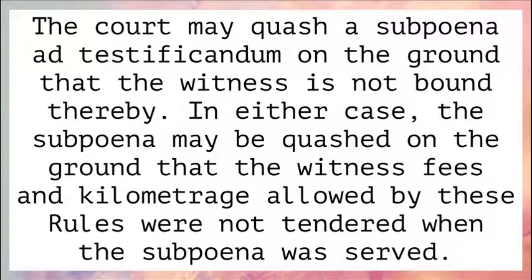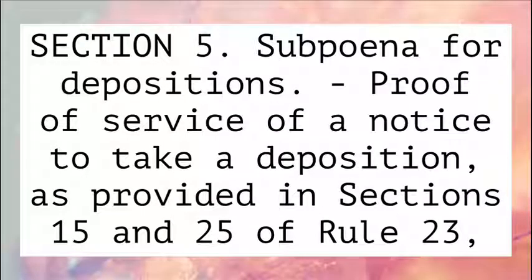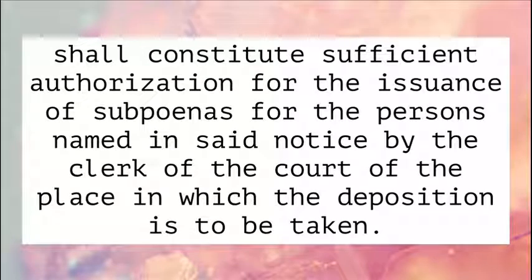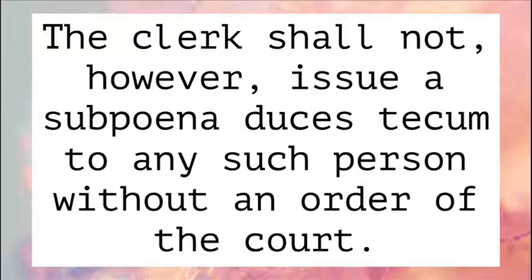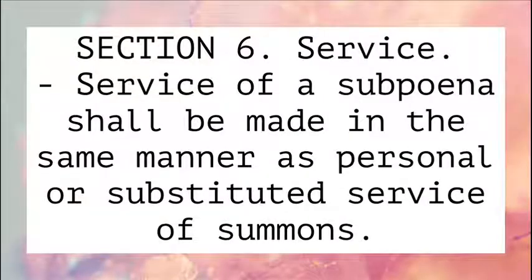Section 5: Subpoena for depositions. Proof of service of a notice to take a deposition as provided in Sections 15 and 25 of Rule 23 shall constitute sufficient authorization for the issuance of subpoenas for the persons named in said notice by the clerk of the court of the place in which the deposition is to be taken. The clerk shall not, however, issue a subpoena duces tecum to any such person without an order of the court.